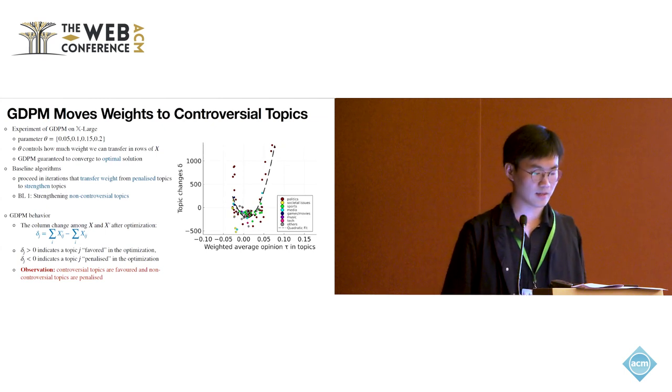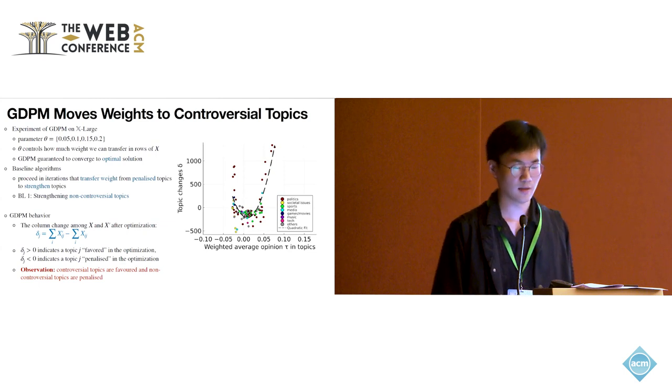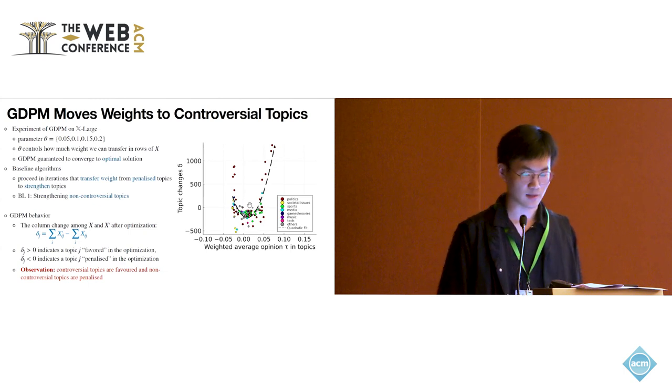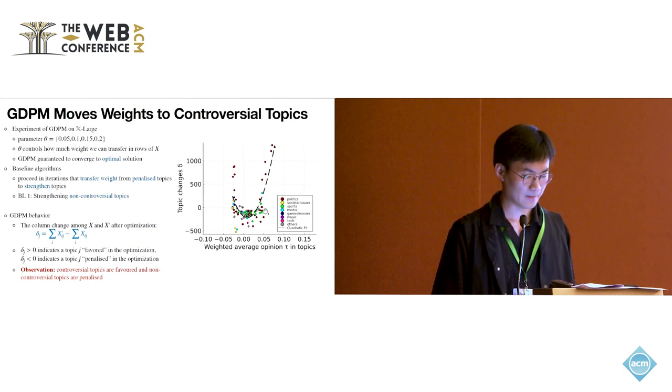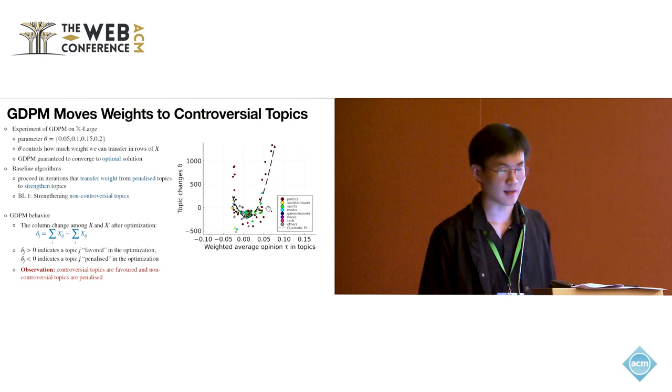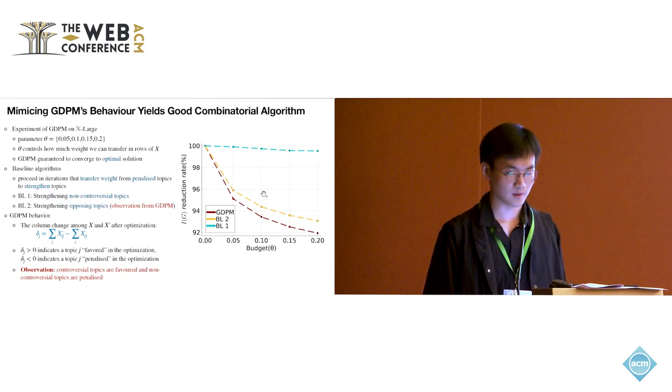This made us very curious about the behavior of the algorithm. Then we look at the column change of the polarization of the user interest matrix X before and after implementation. We observe the patterns very clearly. The controversial topics are favored and non-controversial topics are penalized. With this observation, we propose a second baseline to strengthen the opposing topics, and it works pretty well.